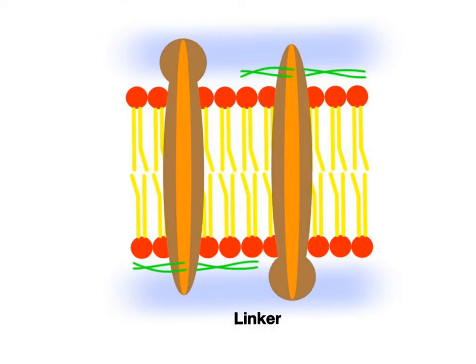Linker proteins do what their name suggests, linking or connecting protein to protein, membrane to membrane, or cytoskeleton proteins like actin microfilaments or keratin intermediate filaments within the cytoplasm to the membrane.